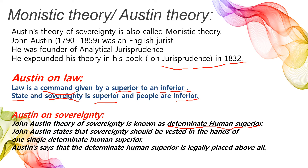Determinant human superior ka matlab yeh hai ki ek definite person jo society mein sabse zyada superior ho, jiske paas total power ho, wo har tarah se strong ho — mentally, emotionally, economically strong ho. Wo har tarah se powerful ho, use hum determinant human superior kehte hain — yeh definite person jo sabse zyada upar, superior ho.